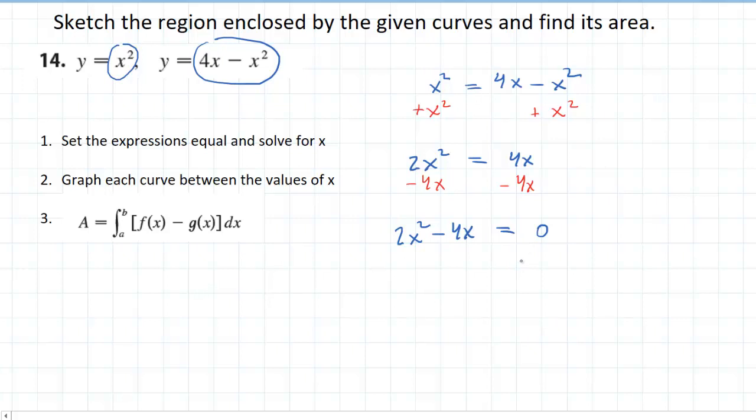Then after getting the equation equal to 0, we're going to want to factor this. So we can see that we have a greatest common factor between these two terms of 2x. So we'll factor out a 2x. This will leave us in parentheses with x minus 2.